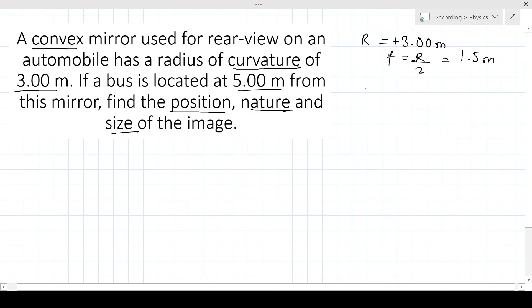Now the object distance is given to be 5 and we know the object distance is always negative, so that is minus 5 meters.